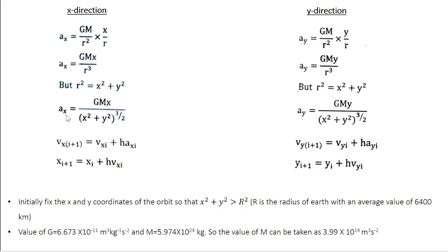So this is the acceleration. Once you get the acceleration, you can calculate velocity and position using Euler's formula. So Vx(i+1) is given by Vx(i) + h×Ax(i), which is the step size, and x(i+1) = x(i) + h×Vx(i).